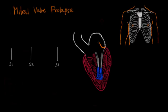The last systolic murmur I want to talk about is mitral valve prolapse. This is pretty much exactly what it sounds like — the valve actually prolapses, or billows, into the left atrium, and this causes a click. This click is similar to the ejection click in aortic stenosis, but it is not associated with ejection of blood through a valve. So this is a non-ejection click, and it's not at the beginning of systole — it's a mid to late systolic click.